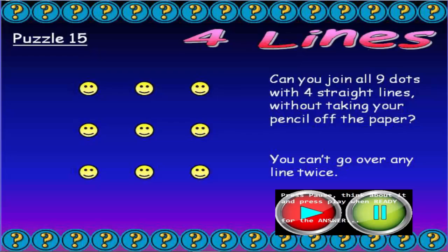You can't go over any line twice. You might want to get a piece of blank paper, draw your nine dots out, and have a go as many times as you can until you get the right answer.